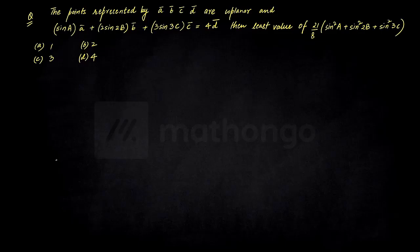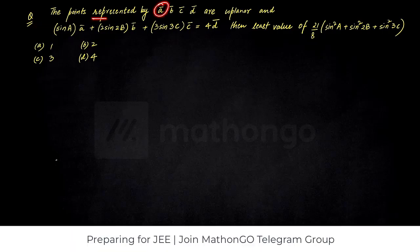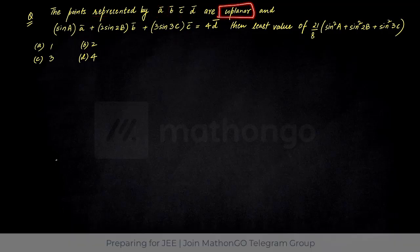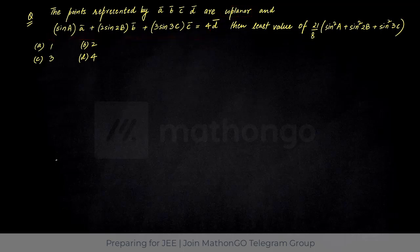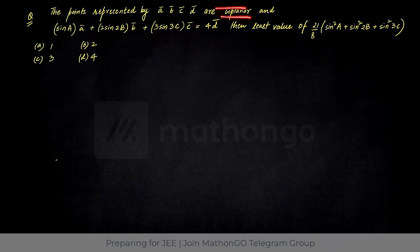Hello students, today we will be discussing this particular question which is from vector 3D, or vector algebra, whichever way you want to call it. It says the points represented — how many points? 4 points. They are coplanar and they are given to satisfy this equation. Now this equation is something which we have already studied in a term called linear combination of vectors. If you remember this, you will also remember a property for 4 points to be coplanar — what does the linear combination of vectors suggest there?